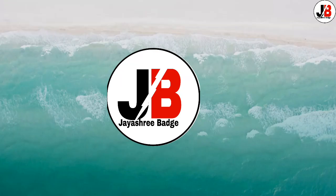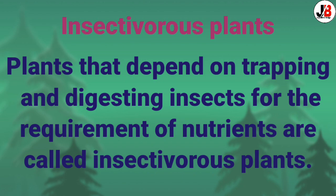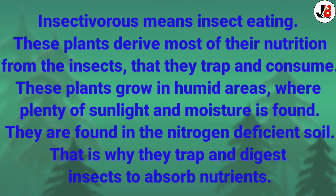Hello students, welcome to JB Study Channel. Today in the natural world we are going to learn about insectivorous plants. These plants are also called carnivorous plants — plants that depend on trapping and digesting insects for their nutritional requirements. Insectivorous means insect-eating.